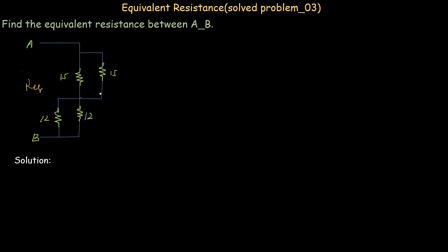If you analyze this network briefly, you will see that these two resistors are in parallel, and these two resistors are also in parallel. One end of these two resistors is connected to one point and the other end is connected to another point — they share the same two points. The same is the case for the other two resistors, which are also sharing the same two points, so they are also in parallel.